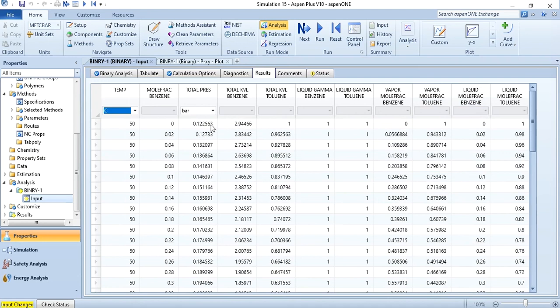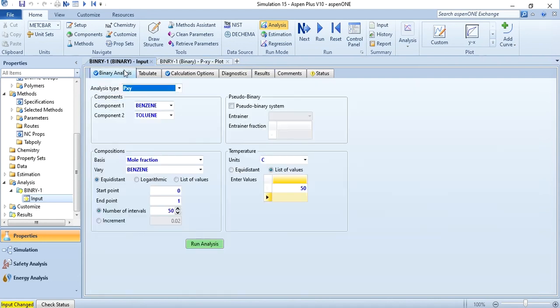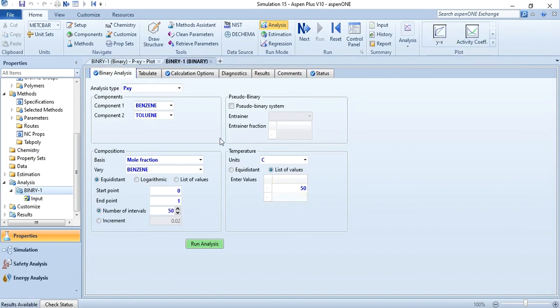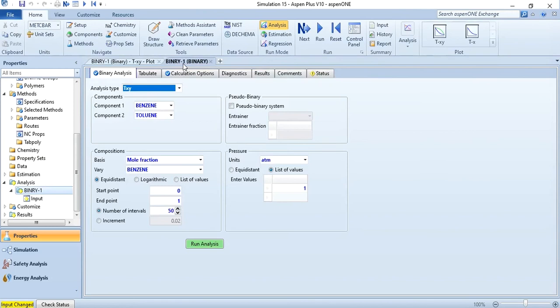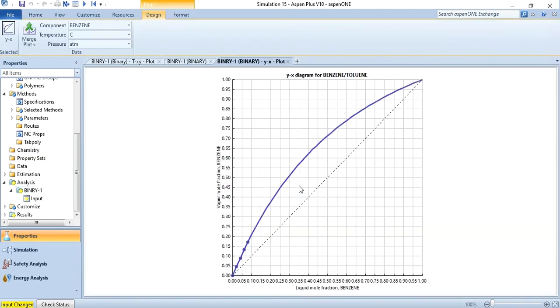Now our last task in this activity is to generate the YX diagram. Similarly if you want to plot the YX diagram at 1 atm you have to go back to the TXY diagram and at 1 atm which is the selected value over here, run the analysis. And after running the analysis you see the TXY diagram is plotted. But your objective is to get the YX diagram. So for this you have to go here and select the YX diagram at 1 atm.